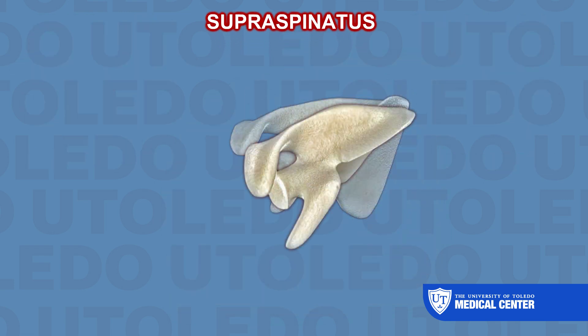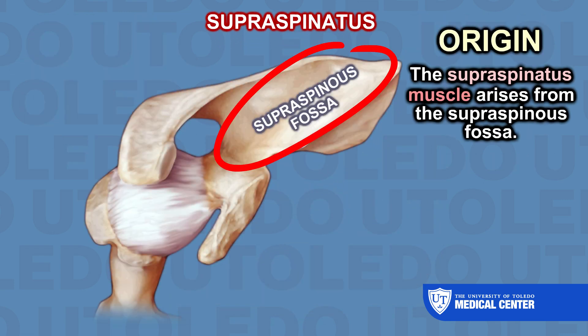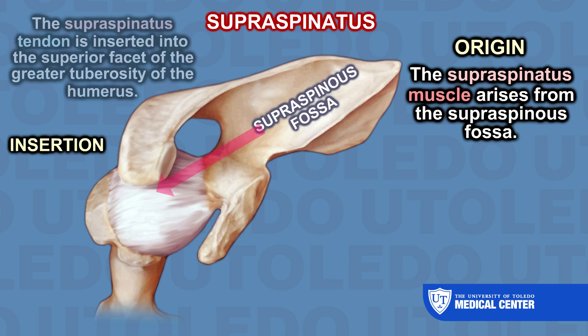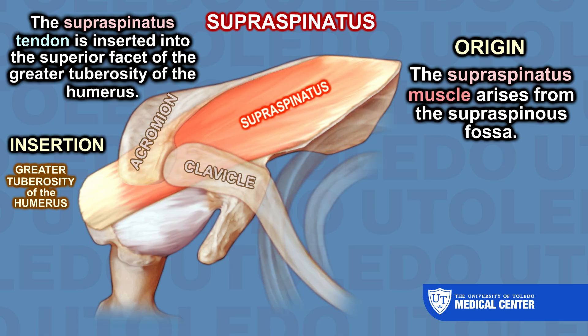Origin of the supraspinatus: it arises from the supraspinous fossa. The supraspinatus tendon is inserted into the superior facet of the greater tuberosity of the humerus.